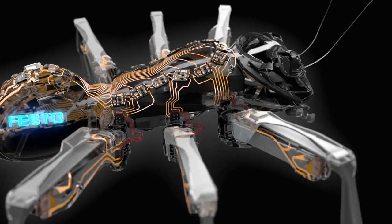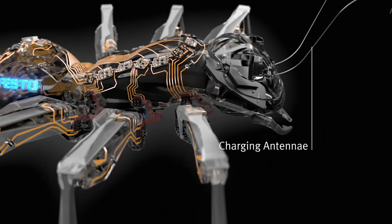Inside the black body are two 7.2-volt batteries and charging antenna that protrude from the head.